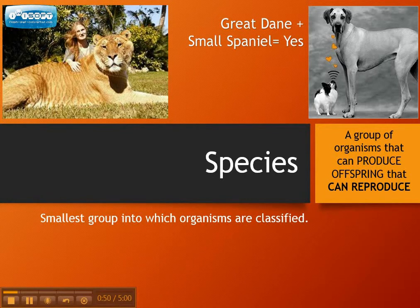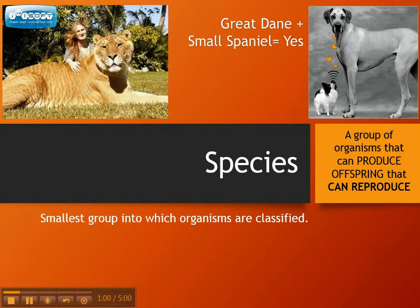So even though they are a different breed — sort of like people might talk about a different race or a different nationality — they are still the same species because they can breed, and their offspring can continue to breed in the future.